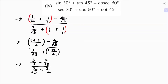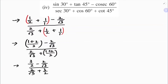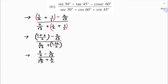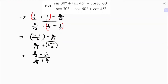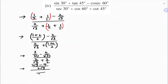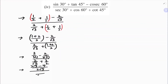Now I'll take the LCM over the numerator. The LCM is 2√3. Here I have 2 so I multiply by √3, giving 3√3. For the other term, I have √3 so I multiply by 2, giving 4. So the numerator becomes (3√3 - 4) over 2√3.